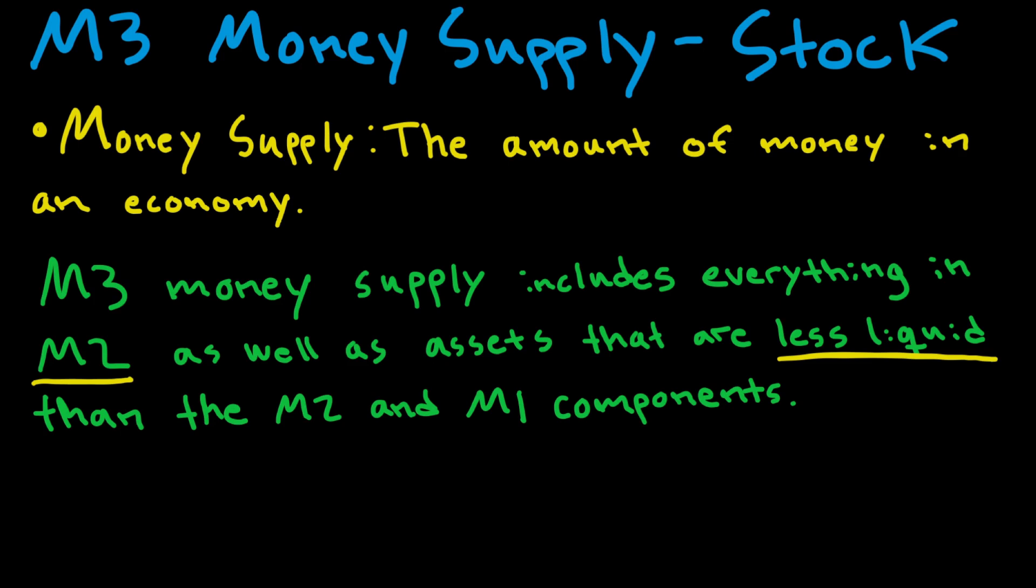I actually have a video about the M2 money supply and the M1 money supply. I will link both videos up in the corner and I actually recommend watching these two before you continue watching this one. So M3 includes M2 and M1 as well as assets that are less liquid.